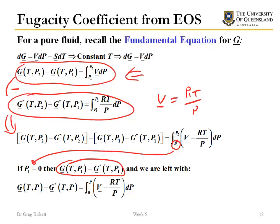What we're left with in that equation is that the real Gibbs free energy minus the ideal Gibbs free energy, i.e. the departure Gibbs free energy, is equal to this integral here. If we have an equation of state then we can use this integration.